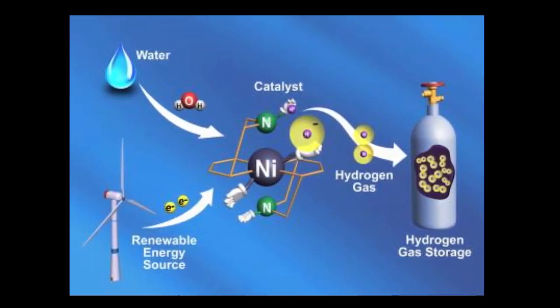By using machine learning models, researchers can significantly reduce the time and cost associated with traditional trial and error approaches, leading to the development of more efficient and durable catalysts for hydrogen production.